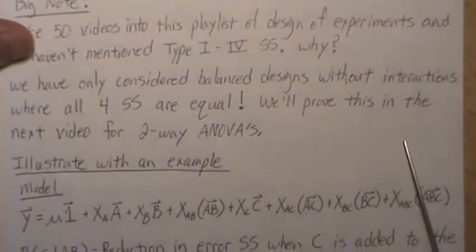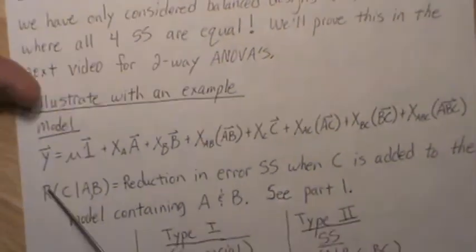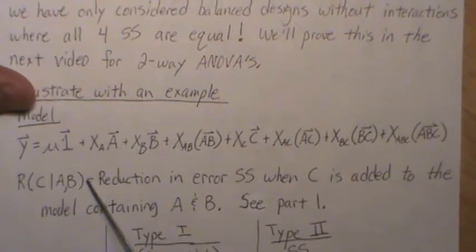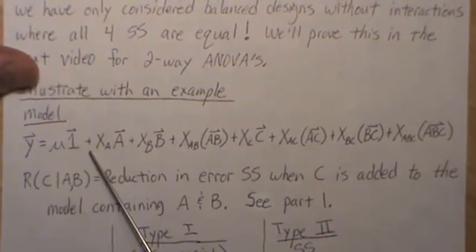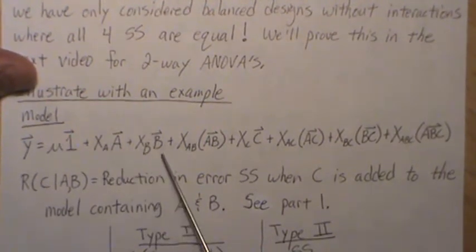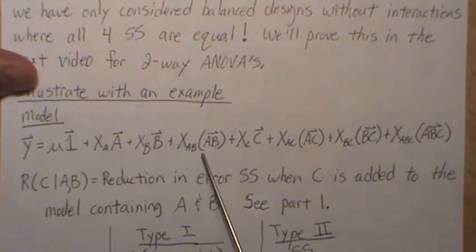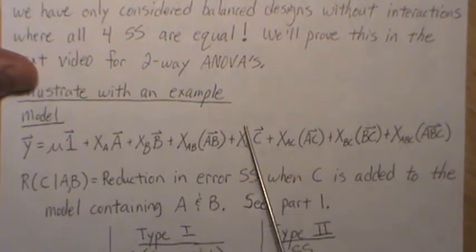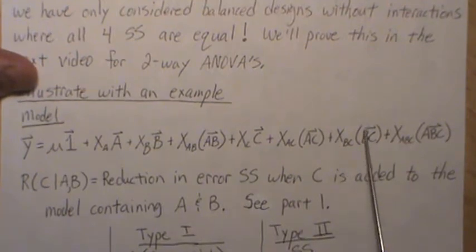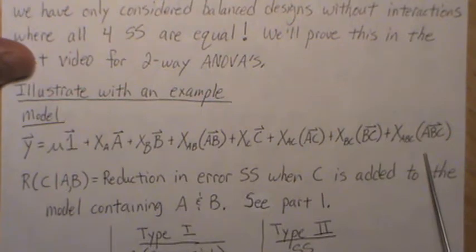Let's illustrate these sums of squares with an example. Here's the model: Y equals mu plus A (or X_A, beta_A), X_beta_B — this is the interaction term between A and B — X_C, the interaction between A and C, the interaction between B and C, and the three-way interaction between all three factors.